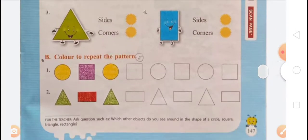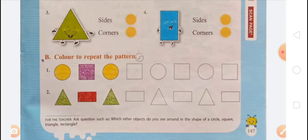Color to repeat a pattern. There is a pattern given. The first shape is a circle colored yellow and there is a square colored purple. The pattern continues: circle, square, circle, square, circle, square, circle, square.